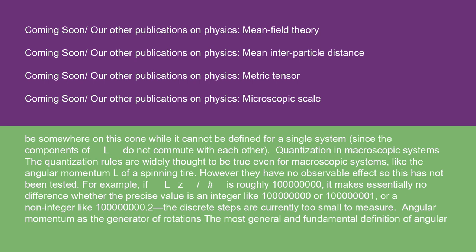Quantization in macroscopic systems: the quantization rules are widely thought to be true even for macroscopic systems, like the angular momentum of a spinning tire. However, they have no observable effect, so this has not been tested. For example, if Lz/ℏ is roughly 100 million, it makes essentially no difference whether the precise value is an integer like 100,000,000 or 100,000,001, or a non-integer like 100,000,000.2. The discrete steps are currently too small to measure.